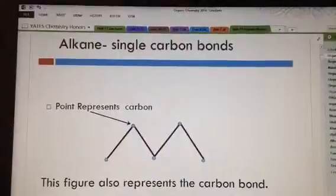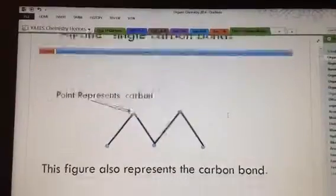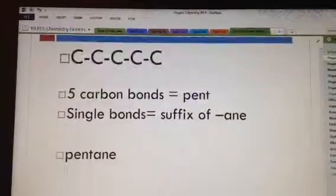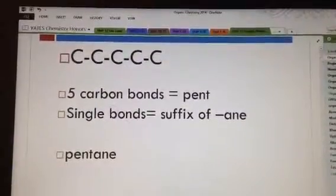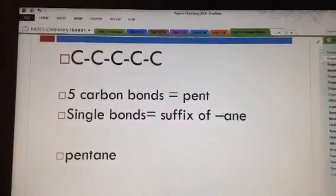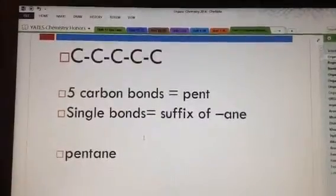So that's still one, two, three, four, five when you count the dots. And that makes this a diagram of pentane. So five carbons equals pent, single bond equals ane, for a combination of pent and ane, pentane.